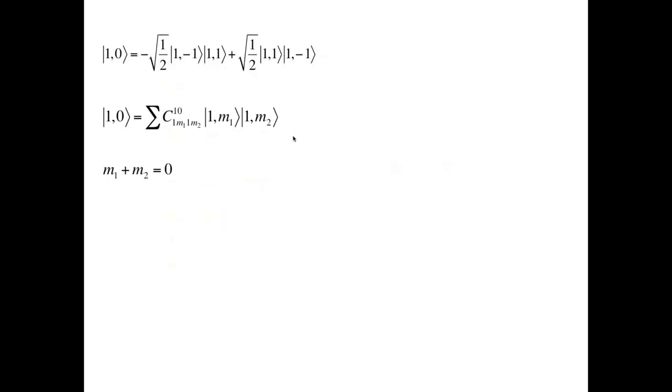If we recall where we started, our goal was to write the coupled state |1,0⟩ as the linear combination of states |1,M1⟩ and |1,M2⟩, such that M1 plus M2 is equal to 0. Indeed, we accomplished that. The Clebsch-Gordan coefficients for state |1,0⟩ can be written as shown here.